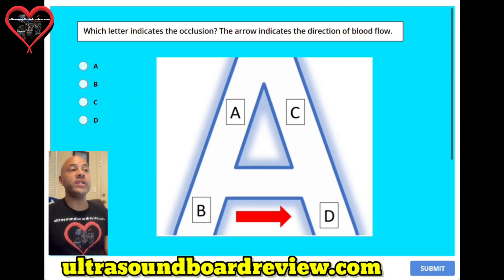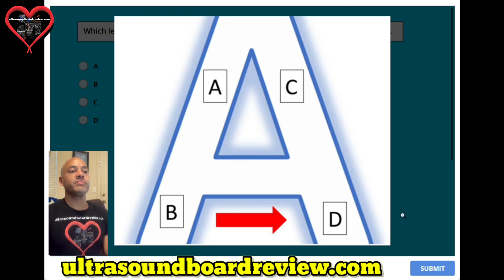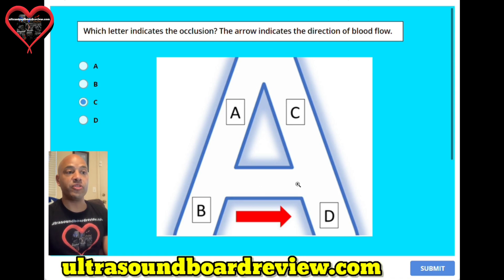Question number twelve. Which letter indicates the occlusion? The arrow here indicates the direction of blood flow. The answer is C. Blood flow will stop here, then flow down here, and then move through here to perfuse this side.